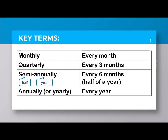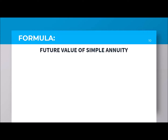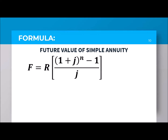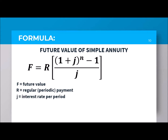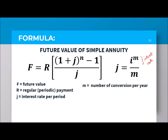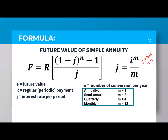So those are the terms commonly used in our problem solving. Our first formula is the future value of a simple annuity. F pertains to the future value. R is the regular or periodic payment. J represents the interest rate per period, with the formula J equals I raised to M over M. M pertains to the number of conversions per year.